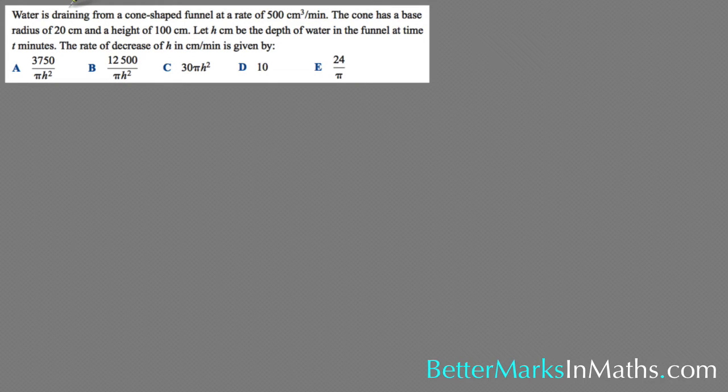In this question, water is draining from a cone-shaped funnel at a rate of 500 centimeters cubed per minute. The cone has a base radius of 20 centimeters and a height of 100 centimeters. Let h centimeters be the depth of water in the funnel at time t minutes. The rate of decrease of h in centimeters per minute is given by one of these.